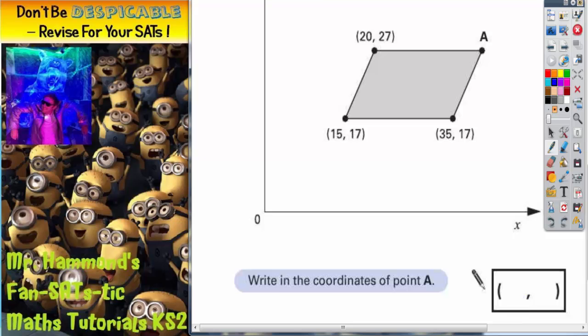Well, the first thing we need to remember with any set of coordinates is that the first number before the comma is how far along the corridor you go, and the second number after the comma is how far up the stairs you go.